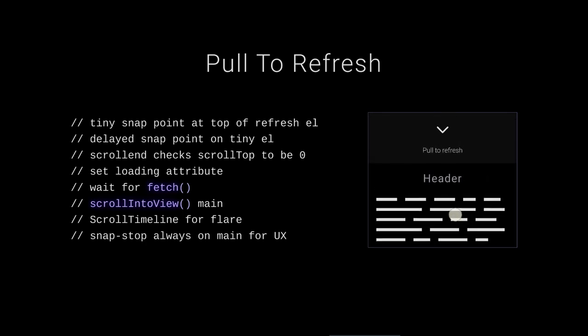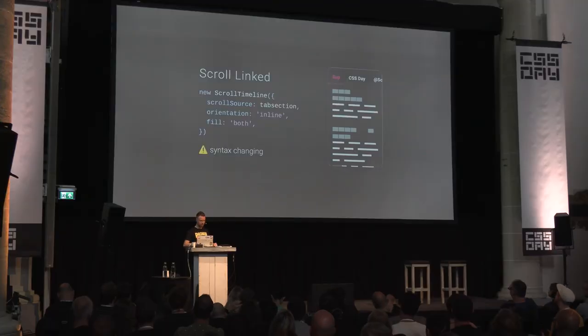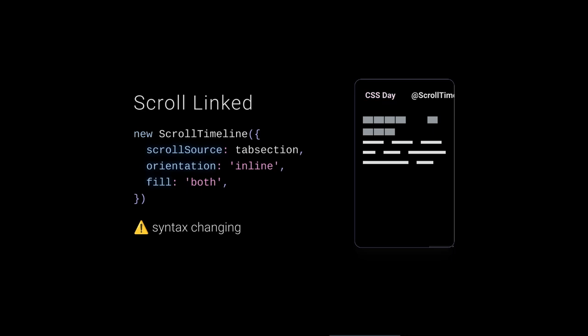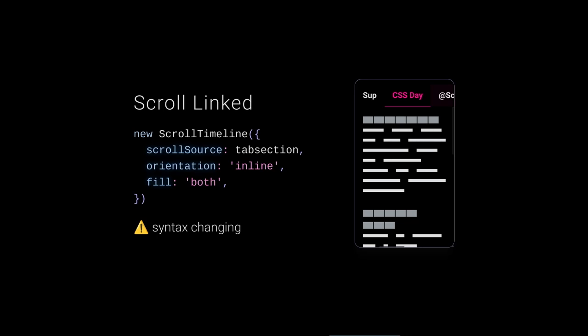I added scroll-timeline for flare, and snap-stop: always on main — so if you scroll down and come back up it stops at main rather than continuing up into the refresh area. That's an important UX moment. Scroll timeline is really nice with scroll snap points — it's almost like you have keyframes and can define animations between snap points. Here's my tabs example: as I swipe between tabs, an underline grows to the width of the destination, and it scrolls content sections into view.